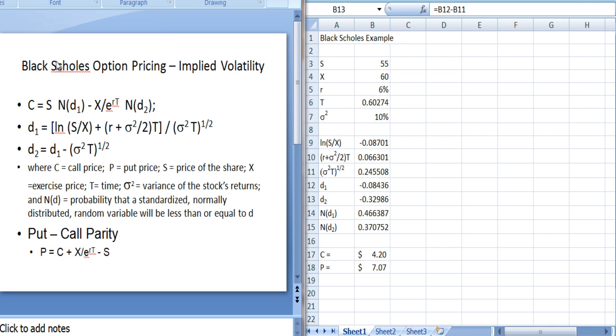Now what's neat about the Black-Scholes model is that all but one variable are observable. The stock price you can just look up a quote in the paper. The exercise price X you can just look up, it's part of the contract, so you can pick the option with the specific exercise price you're interested in and value that.